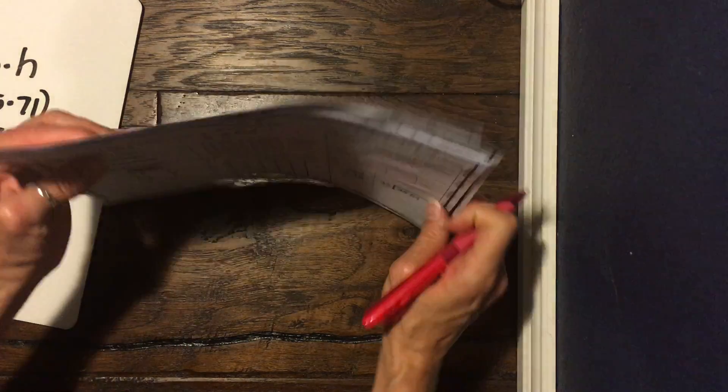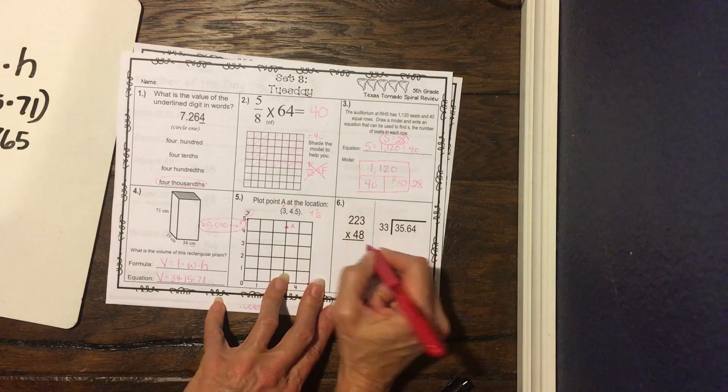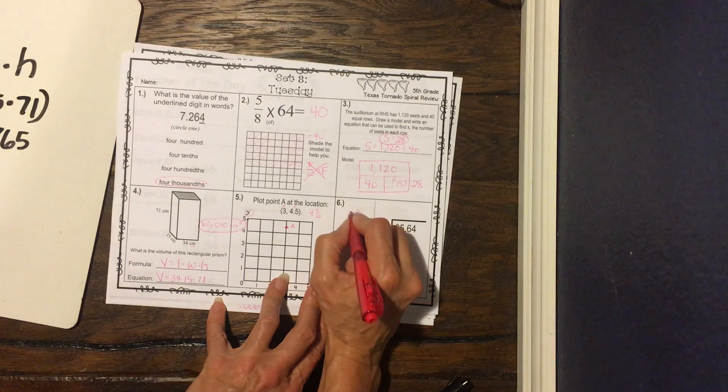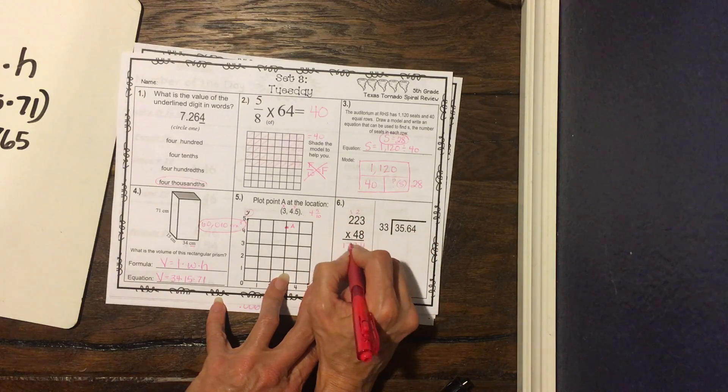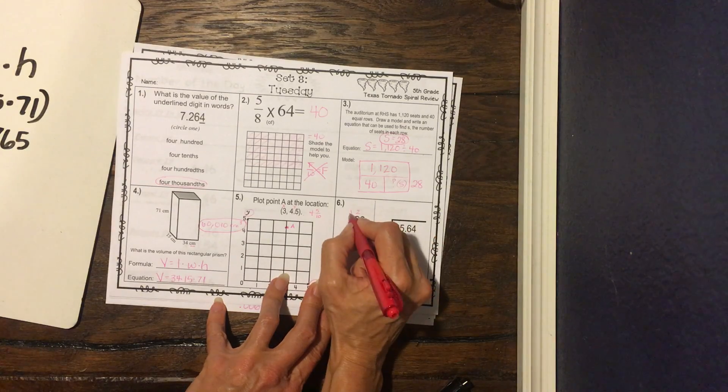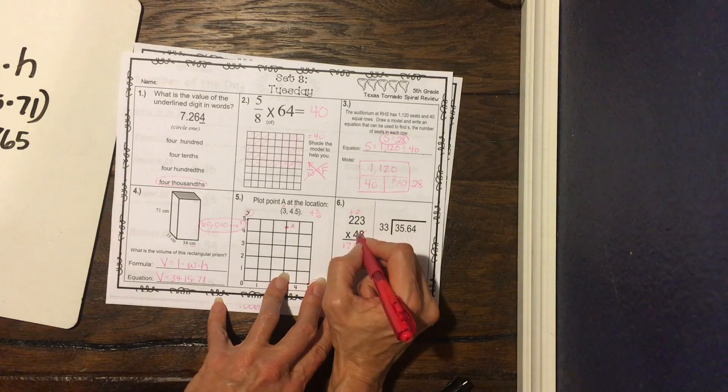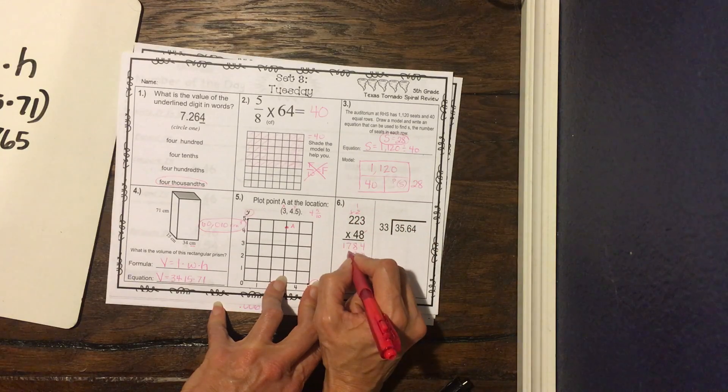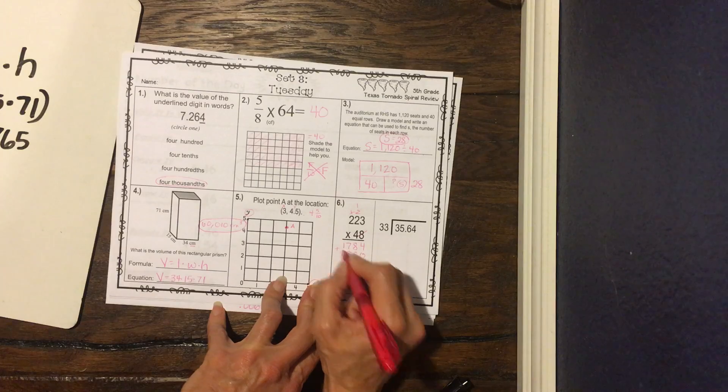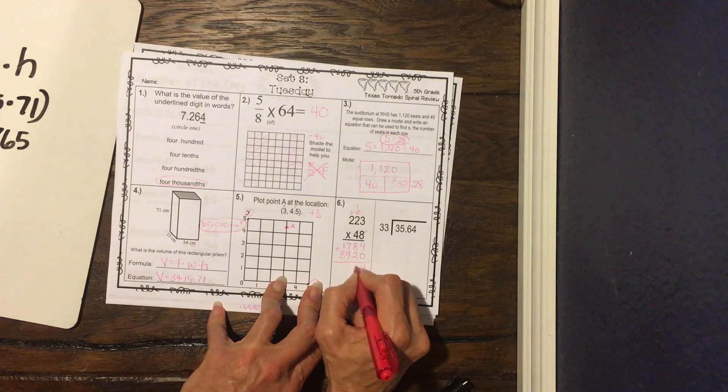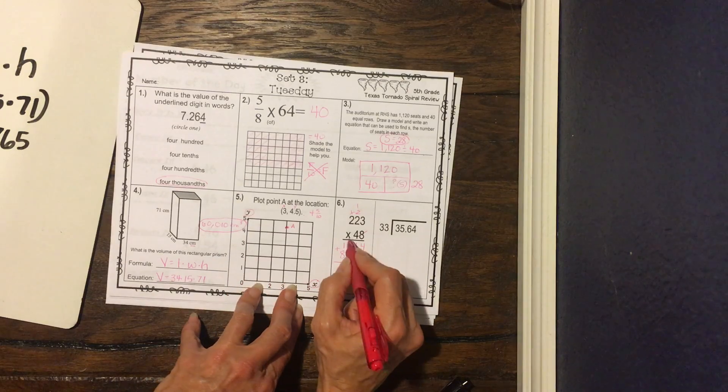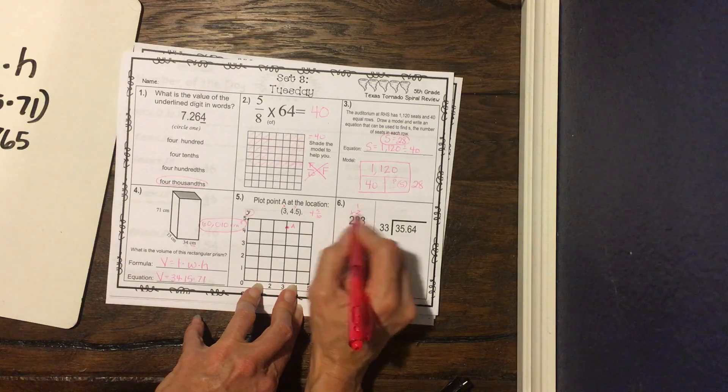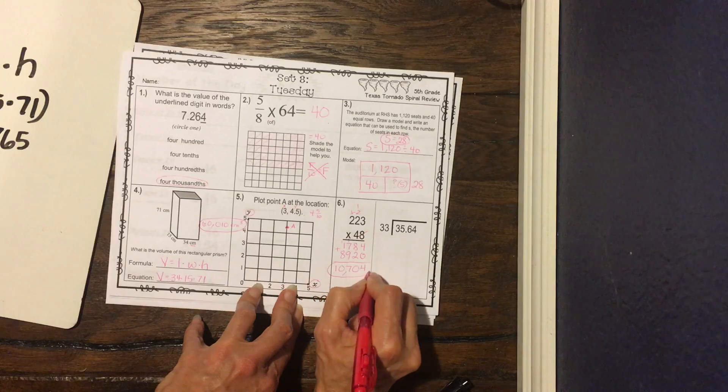All right, we are gonna do some pretty easy multiplication now. So we have 8 times 3 is 24, carry the 2. 8 times 2 is 16, plus 2 is 18, carry the 1. 8 times 2 is 16, plus 1 is 17. We put our 0 placeholder. We're done with our 8. We're done with that being carried. We start with our 4. We have 4 times 3 is 12, carry the 1. 4 times 2 is 8, plus 1 is 9, and 4 times 2 is 8. We add these numbers together. We've got 4, 8 plus 2 is 10, carry the 1. We look for 10s, 9 plus 1 is 10, plus 7 is 17, carry the 1. We have 8, 9, 10. We don't have any decimals, so we count 3 over, and there's our answer.